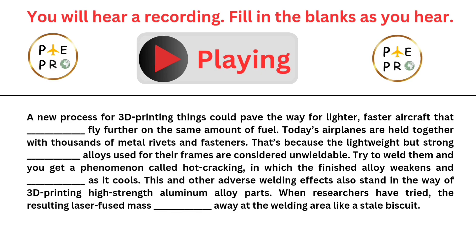A new process for 3D printing could pave the way for lighter, faster aircraft that potentially fly further on the same amount of fuel. Today's airplanes are held together with thousands of metal rivets and fasteners, because the lightweight but strong aluminum alloys used for their frames are considered unweldable.